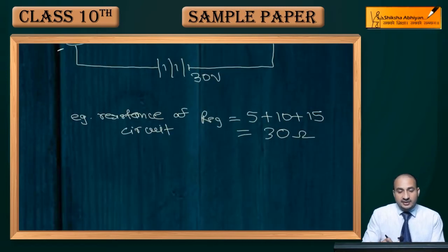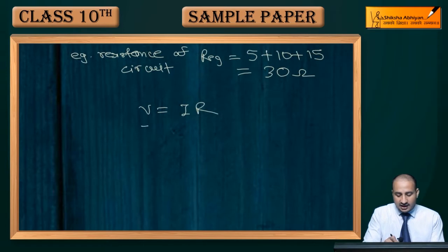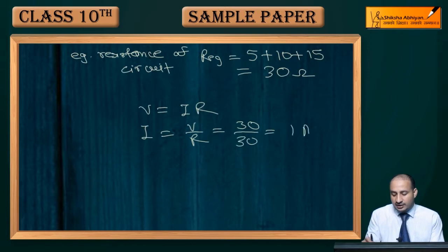So current is here. Now resistance is 30, since V is equal to IR, and I is equal to V by R. That is 30 upon 30, that is 1 ampere.